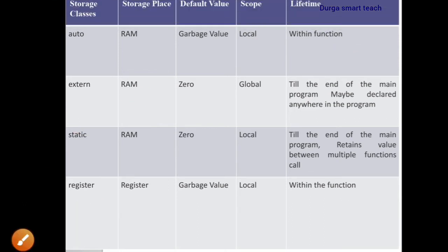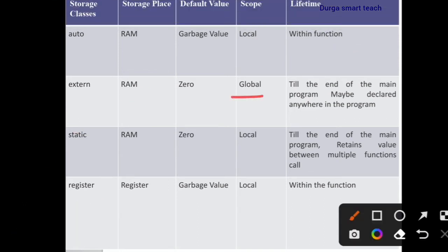The scope of external variables is global — that is global declarations, which means before the main function. That variable can be used anywhere in the program. The lifetime is till the end of the main program; we can use external variables throughout the program.